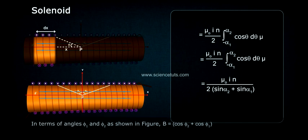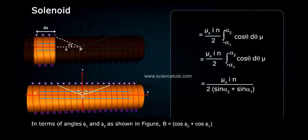In terms of angles φ₁ and φ₂ as shown in figure, B equals μ₀ i n by 2 times (cos φ₂ plus cos φ₁).